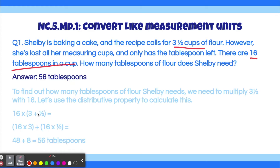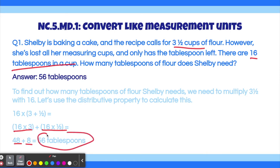We can use the distributive property to calculate this: 16 times 3 and 16 times one half. Evaluating: 16 times 3 is 48, and 16 times one half is just dividing 16 into two parts, which is 8. So 48 plus 8 equals 56 tablespoons, which is our answer.